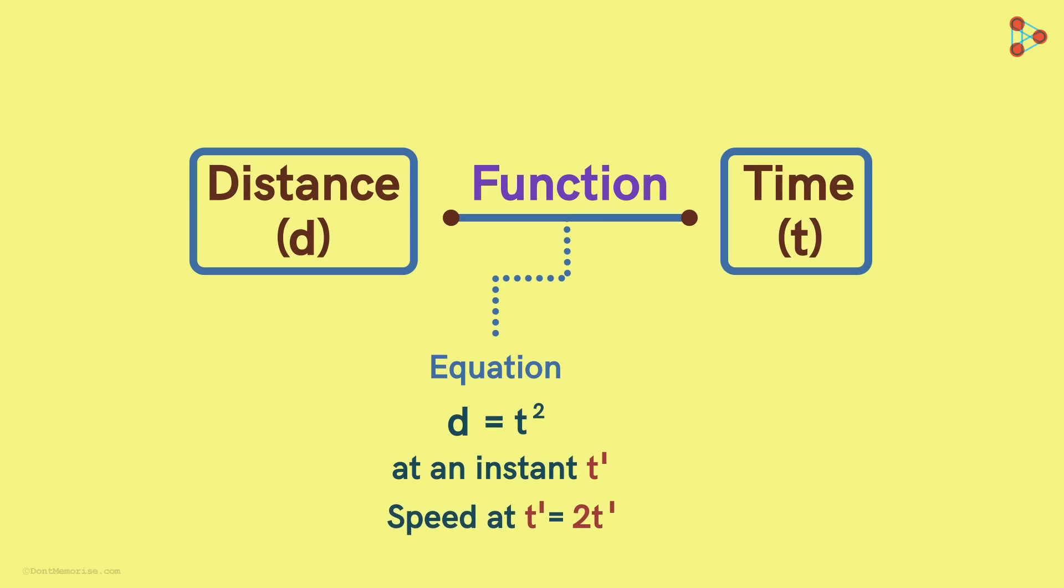Let's say we slightly modify this relation to this. Here k is a constant. Now if we go back and do the calculations, we will get the speed at any instant t dash as k times 2t dash.